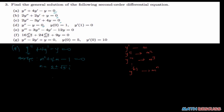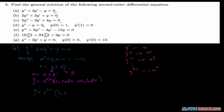We recall that if the solution of the auxiliary equation is m equals alpha plus or minus beta·i, then the solution of the homogeneous differential equation is of the form y equals e to the power alpha·x times (c1 cosine of beta·x plus c2 sine of beta·x). Here our alpha is 2 and beta is root 5. So y equals e to the power 2x times (c1 cosine of root 5·x plus c2 sine of root 5·x). That is the general solution of the first one.